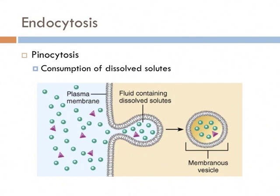Endocytosis is the bringing of stuff into a cell. Endo means in, and cytosis means cellular — into the cell. A type of endocytosis is pinocytosis. Pino is Greek for bringing together, so pinocytosis means bringing together into the cell. Cell membranes can form these vessels, and these vessels can fill with stuff. Then the cell membrane pinches off, and the phospholipid bilayer of the membrane attaches to itself, producing a package of solutes that can float around the cell. Cells eat too!